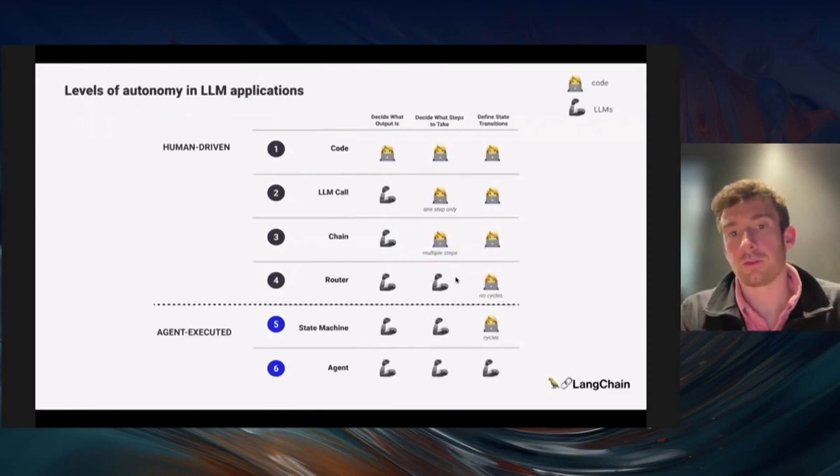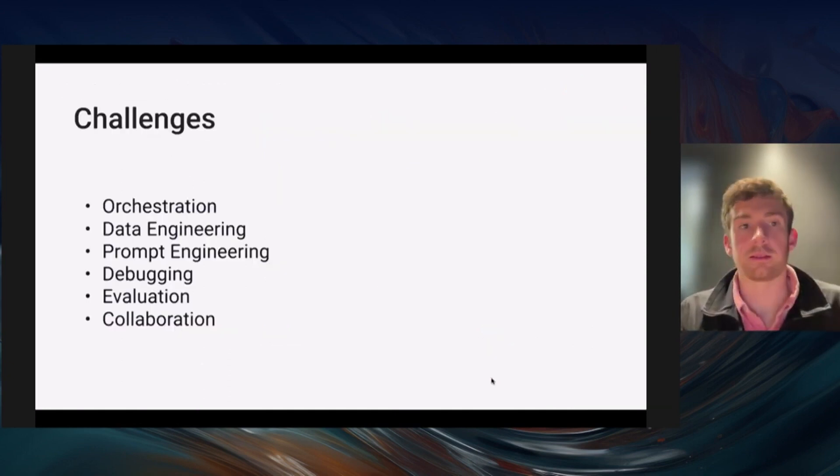If we break this down into one chart, we can see that we've broken this down into what the LLM is doing versus what the human is doing. Deciding what the output is, that's the LLM call. Deciding what steps to take, now you start getting into the router and the state machine. If you define the state transitions, the human defines those for the state machine, and for the agent it's up to the LLM to do it implicitly in its head.